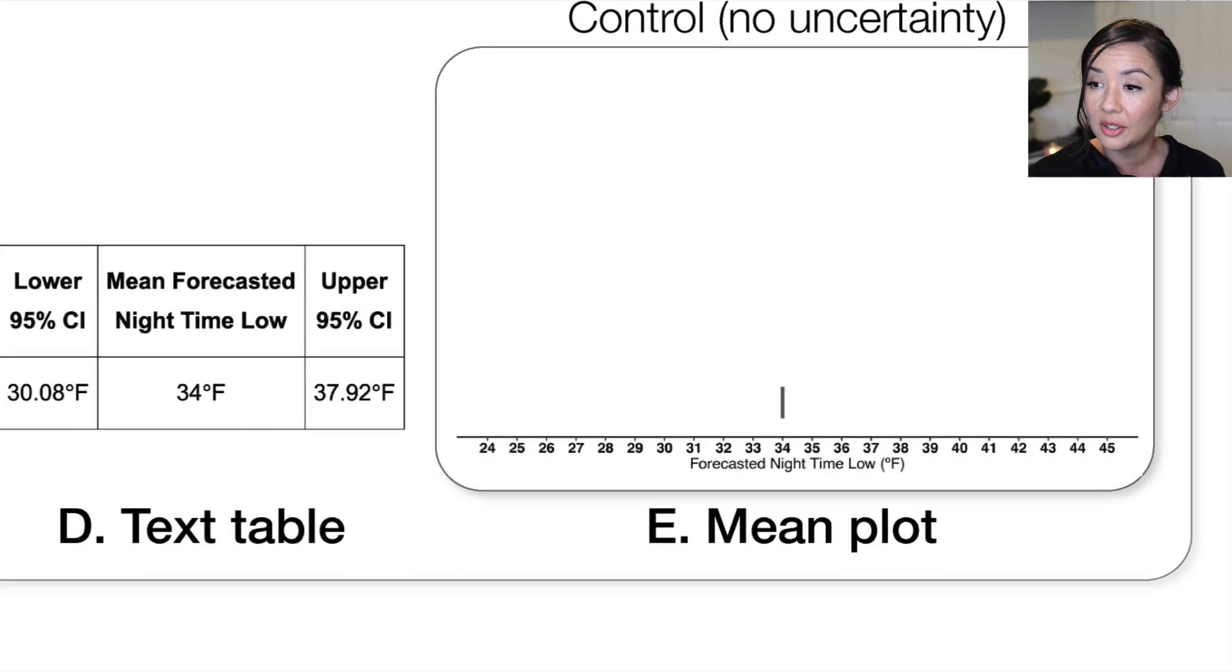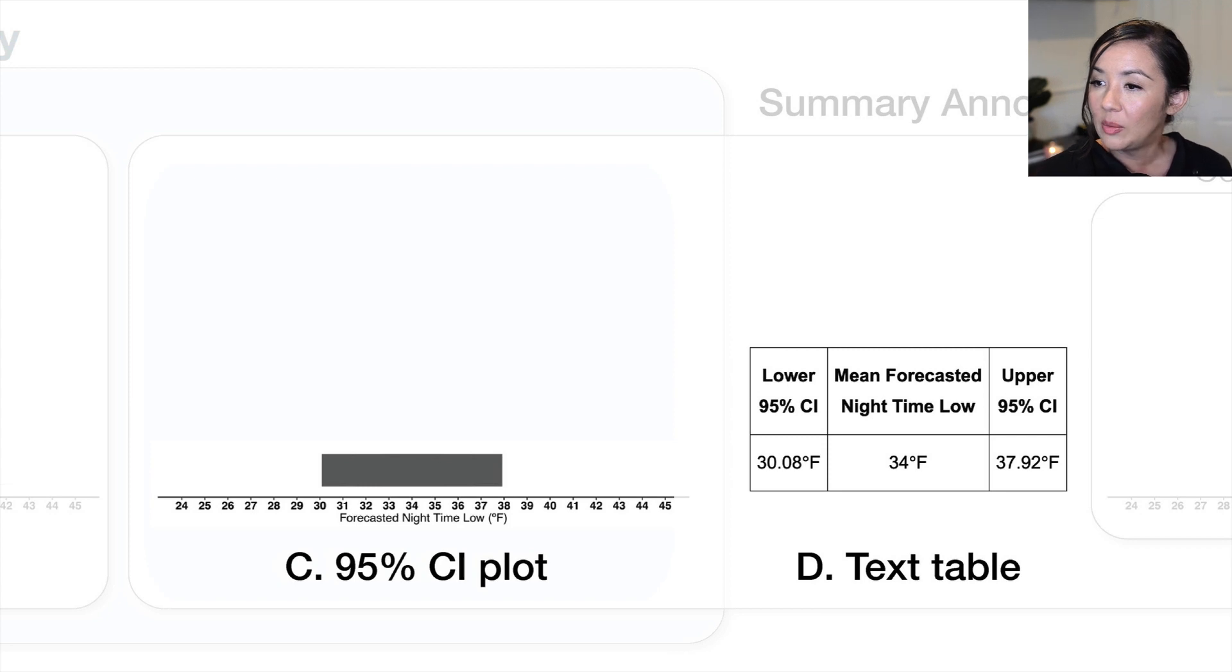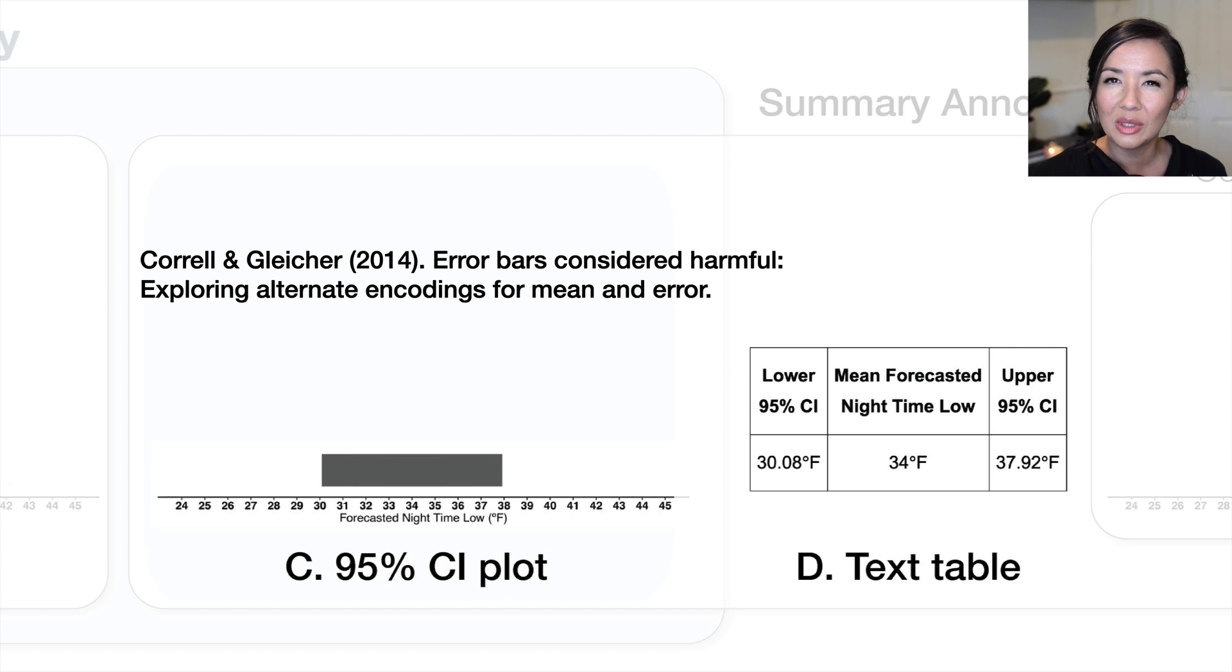The second type of communication that we wanted to compare this to was a text table. We were interested in looking at text because some recent work has been criticizing uncertainty visualizations. So that was the motivation here, that maybe this textual expression requires less effort than the visual expressions. And we wanted to compare this to a 95% confidence interval that was visual. We didn't really think that these types of confidence interval plots would be the best type of communication. There's a large body of work demonstrating that they tend to find some of the most poor performance. But it was a direct comparison to the text table.